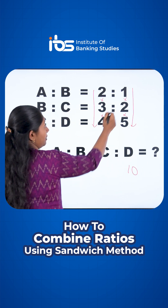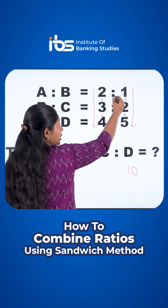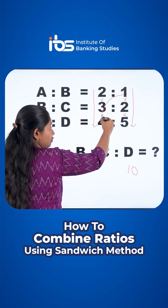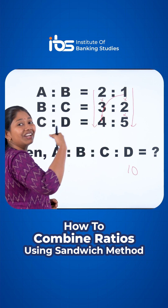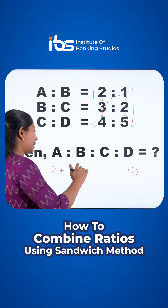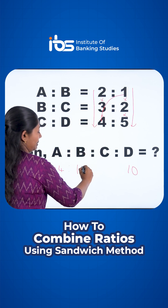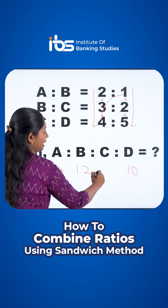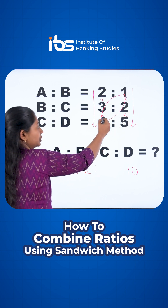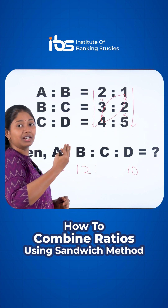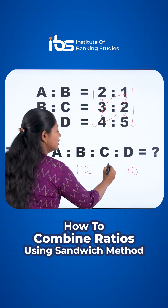The next step is to do 1 into 3 is 3, and 3 into 4 is 12 — that means B is 8. Next, we add 1 into 2 into 4, that means 1 into 2 into 4 is 8.